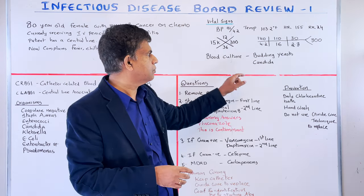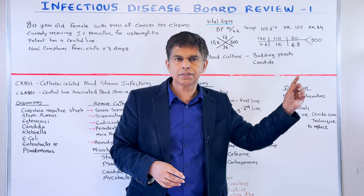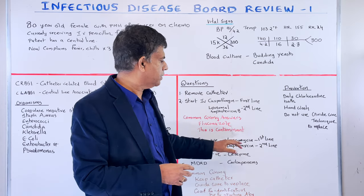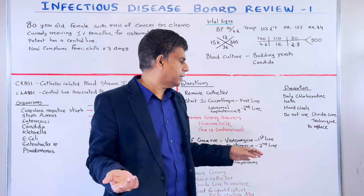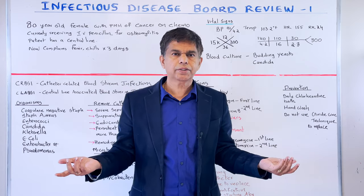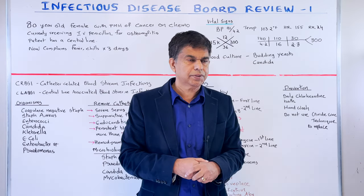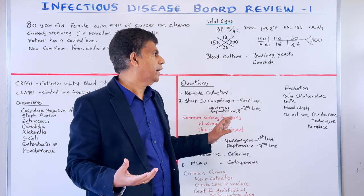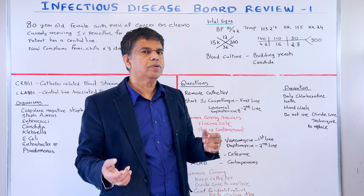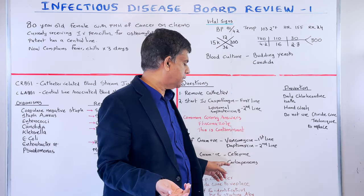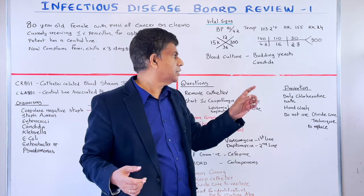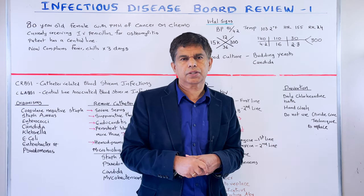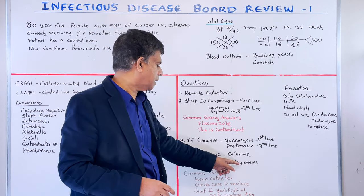Now let's change the scenario. If the blood culture comes back gram-positive instead, first-line treatment is vancomycin, and the second line is daptomycin to cover all gram-positive organisms. If the culture comes back gram-negative, use cefepime. And if it is a multi-drug resistant organism (MDRO), you treat with a carbapenem.